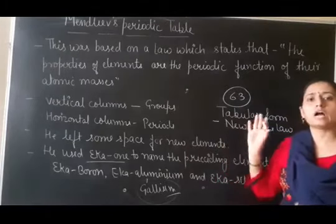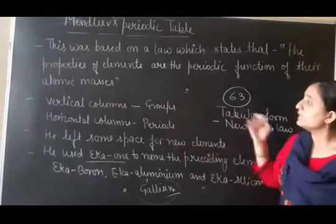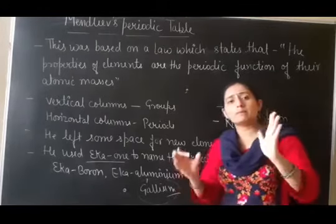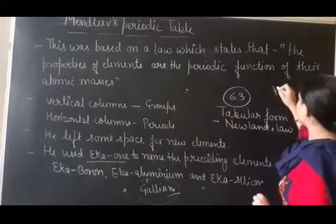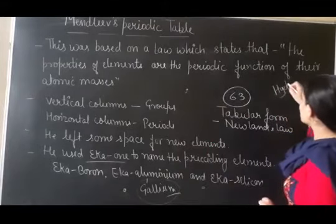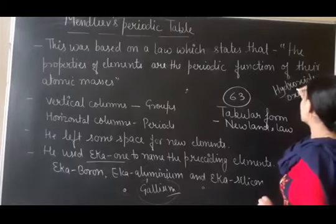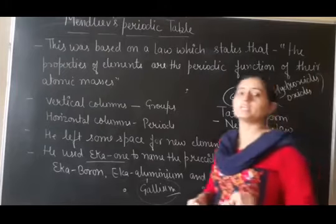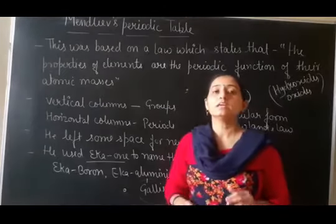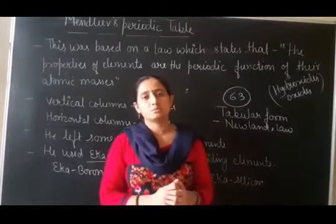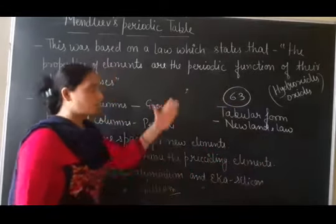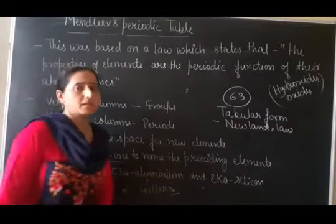The Mendeleev table that we will draw for you is basically connected on the basis of oxide and hydroxide forms - that is, the formulas of hydroxides and oxides. And these hydroxide and oxide formulas depend on valencies. Let us draw the Mendeleev table to see how elements are arranged.